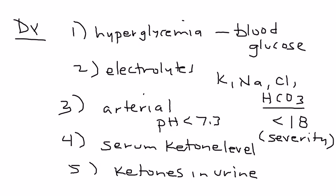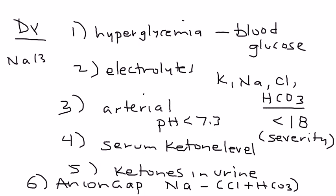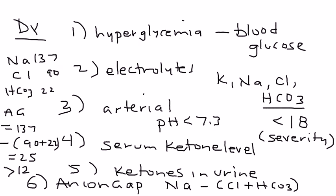And, then one final thing I wanted to touch on is the anion gap. And, this is very important. The anion gap is a calculation. And, it's basically a formula. It's the sodium minus the chloride plus the bicarb. So, for example, if you had a patient where the sodium was 137 and the chloride was 90 and the bicarb level was 22, the anion gap would be 137 minus 90 plus 22, which equals 25. And, in DKA, the anion gap will be greater than 12. So, remember that.